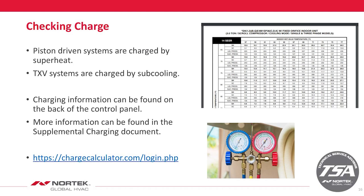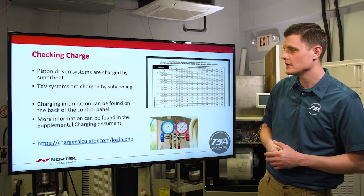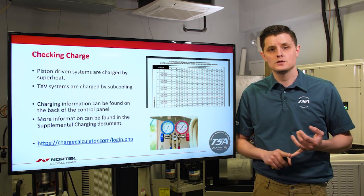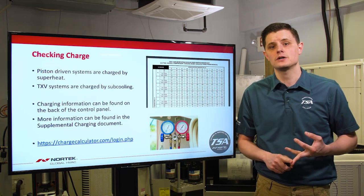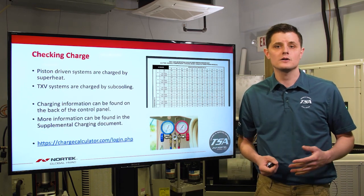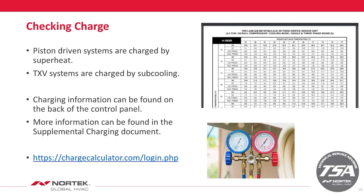The supplemental charging document is available on our technical literature library. It includes high side and low side pressure along with superheat, subcooling, and discharge temperature numbers. That will vary by tonnage and whether you're in cooling or heat pump mode. Another way to check charge is through our charge calculator website at chargecalculator.com, or use the QR code 'charge me' sticker on the outside of the control panel to go directly to that website.